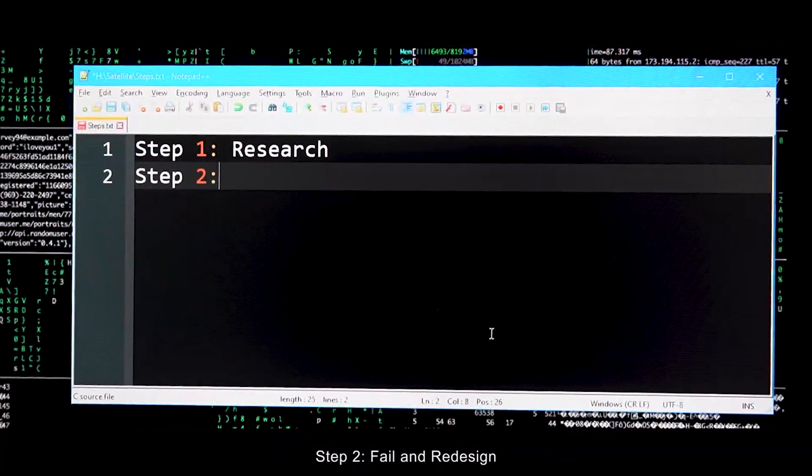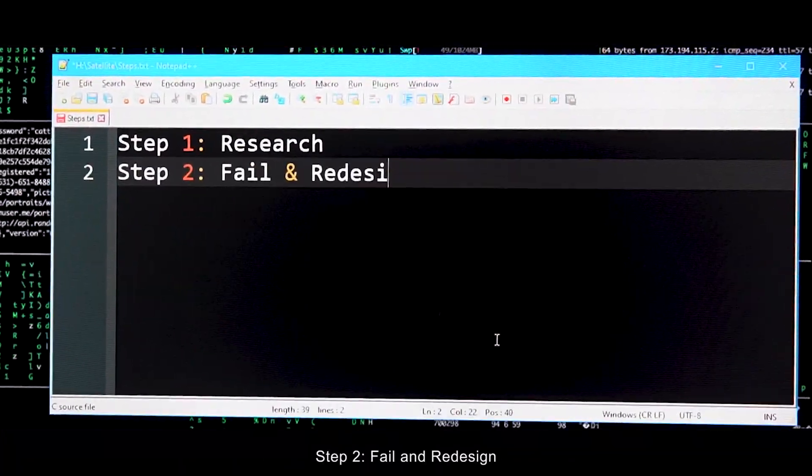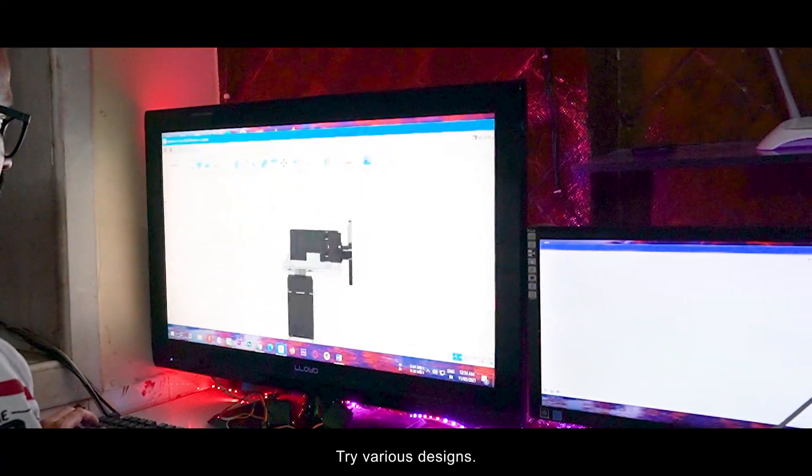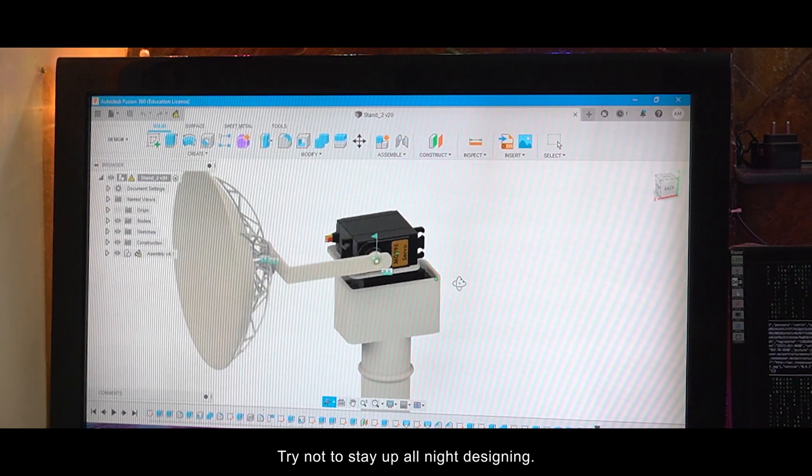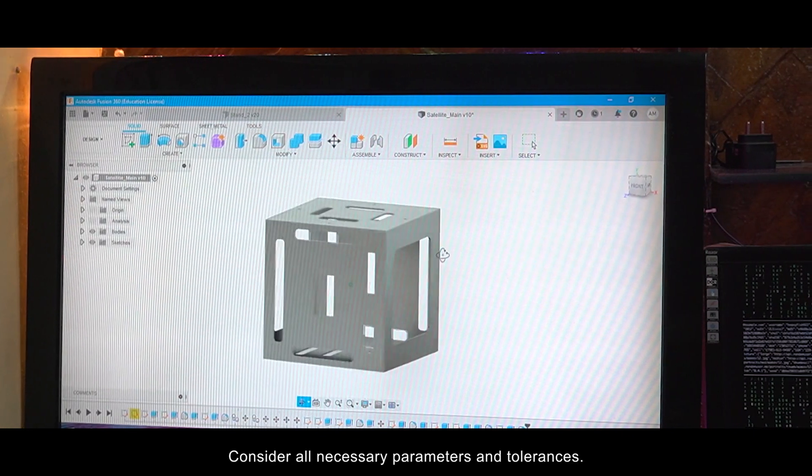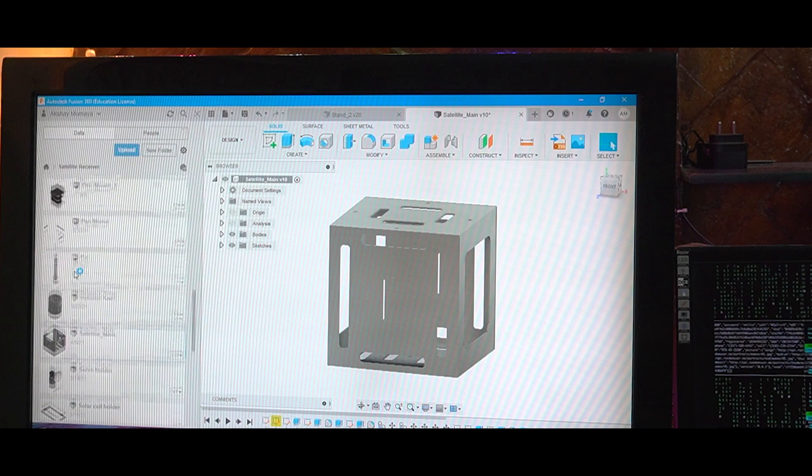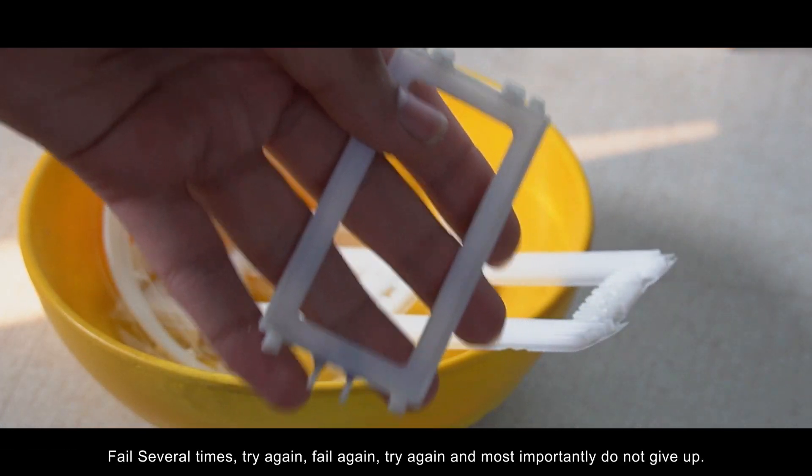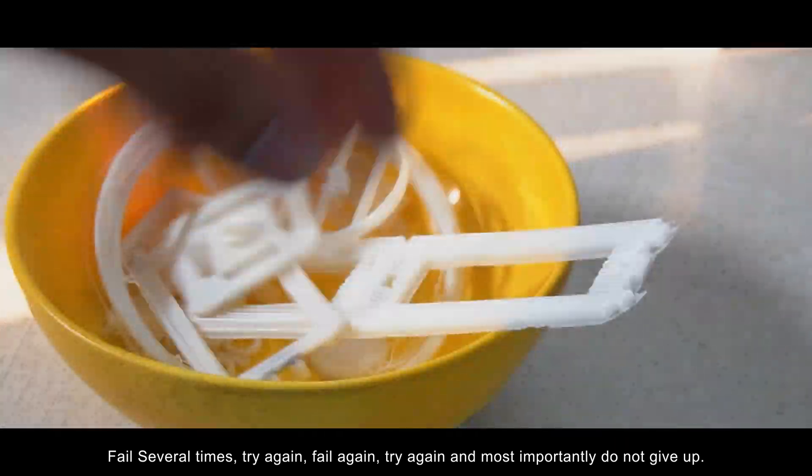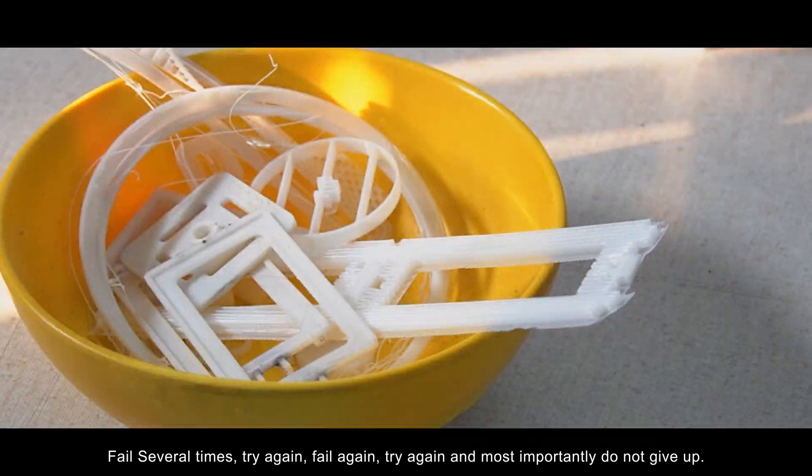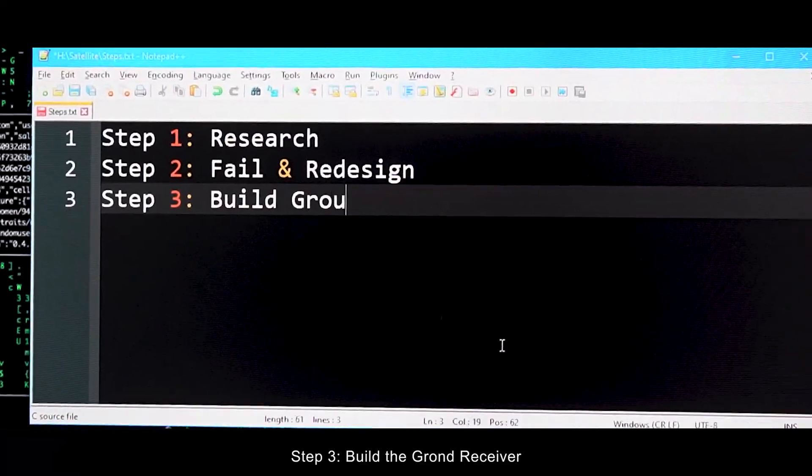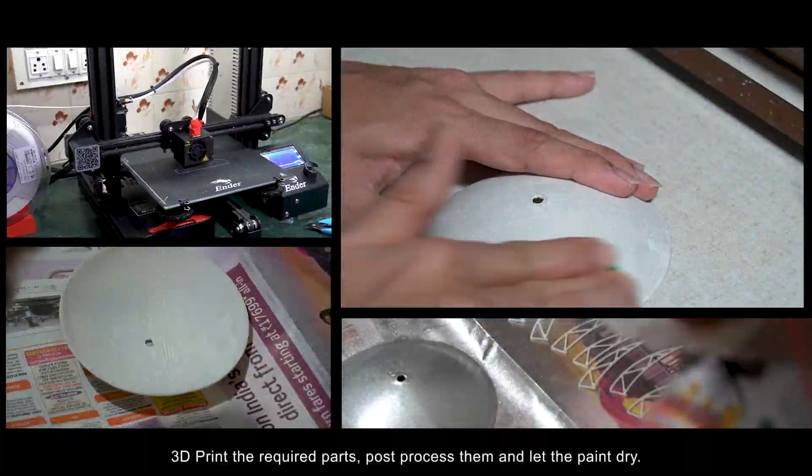Step 2: Fail and redesign. Conclude your research, try various designs. Try not to stay up all night designing. Consider all necessary parameters and tolerances. Fail several times, try again, fail again, try again. And most importantly, do not give up. Step 3: Build the ground receiver.